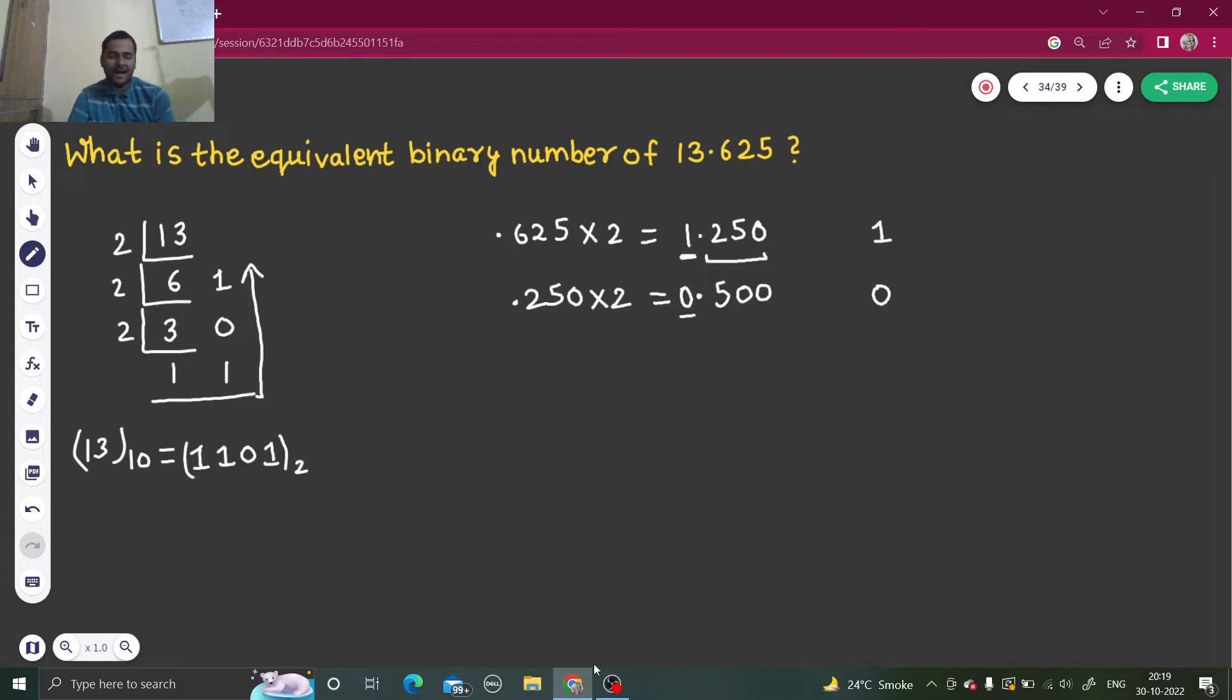Again multiply by 2, so you will get 0.500. You are getting zero here, so write zero. You will not stop until you get zero on the right of the decimal.